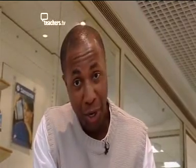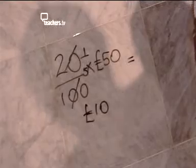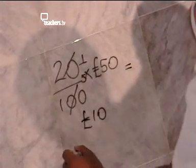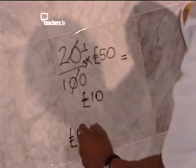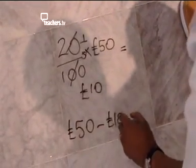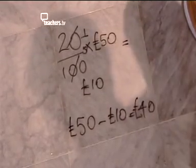Another way to do it: we know that 10% of £50 is £5. 20% is twice that, which is £10. So the actual price that we pay is £50 minus £10, and we actually pay £40.